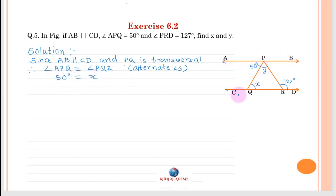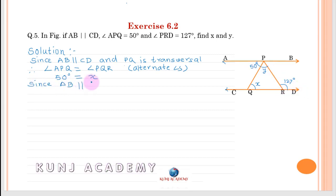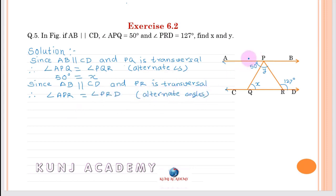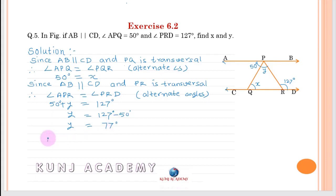Similarly, AB is parallel to CD and PR is a transversal, therefore angle APR equals angle PRD — alternate angles. Angle APR can be written as 50 plus y, and angle PRD equals 127 degrees. Therefore y equals 77 degrees. Answer: x equals 50 degrees and y equals 77 degrees.